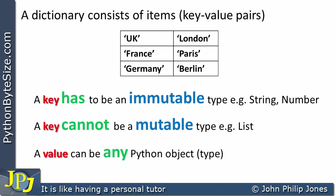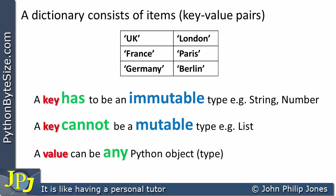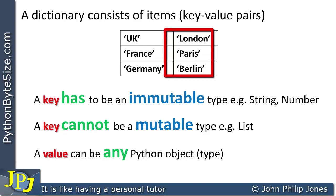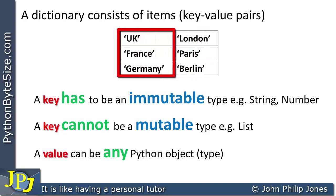A value can be any Python object — i.e., any type. The values column here is currently showing London, Paris, and Berlin, all as strings. In the value position, the values can be any Python type, any Python object. They can be a list, for example. But we cannot have a list in the key positions of a dictionary, because a list is mutable.